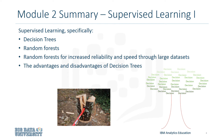In Module 2, you increased your knowledge with regards to decision trees. You should now be able to describe how to build a decision tree, as well as how to build random forests from decision trees. Also discussed was how random forests allow you to achieve increased reliability and speed when having to go through large datasets, when compared to simply using a decision tree. Finally, you reviewed the advantages and disadvantages of decision trees.